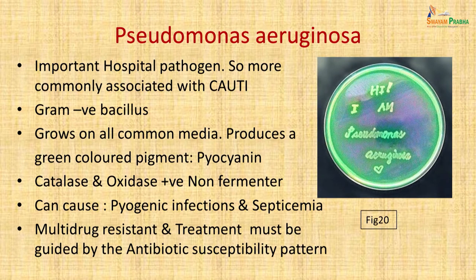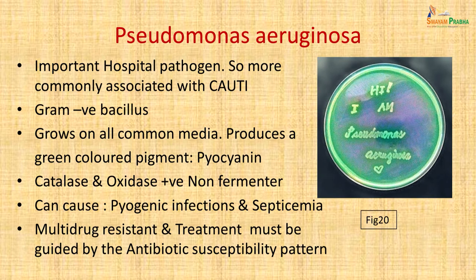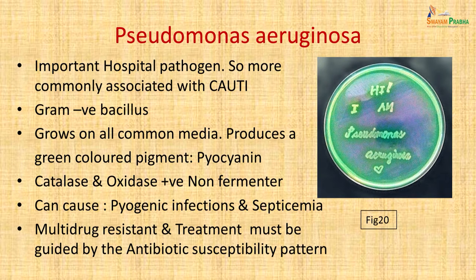Pseudomonas aeruginosa is an important hospital pathogen more commonly associated with catheter-associated UTI (CAUTI). It does not belong to Enterobacteriaceae. It is a gram-negative bacillus growing on all common media and produces a characteristic green pigment (pyocyanin) that spreads all over the plate. It is catalase and oxidase positive and a non-fermenter. It can cause pyogenic infections and septicemia, is usually multi-drug resistant, and treatment must be entirely guided by antibiotic susceptibility patterns.